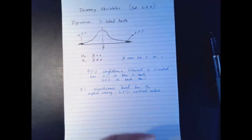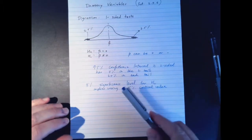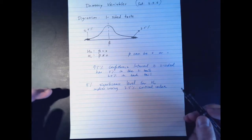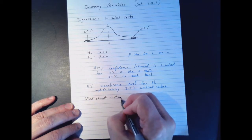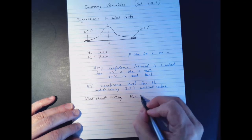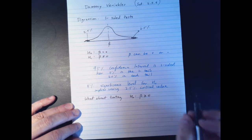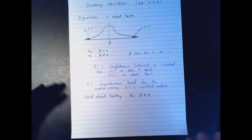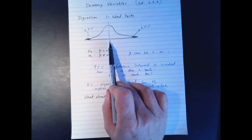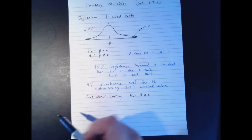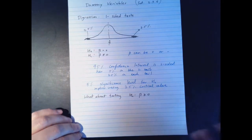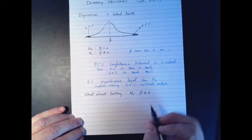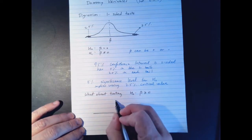Sometimes it's reasonable to say you only need to test in one direction. For example, what about testing the null hypothesis that beta is greater than or equal to zero? It might be that you have other information about your coefficient — that it can't be negative, or you're only interested in testing whether it's positive. In that case, we would use what's called a one-sided test.